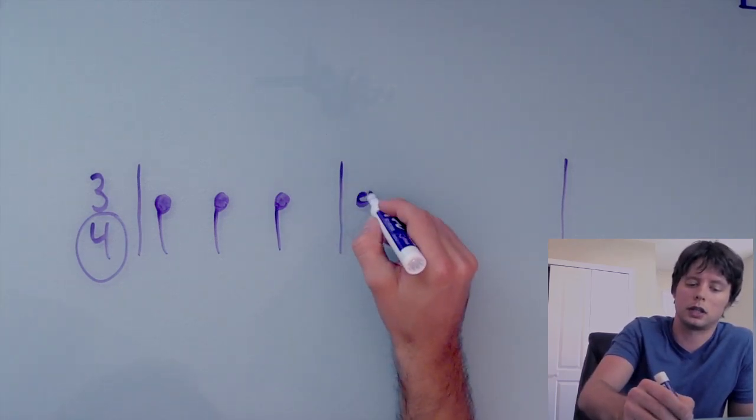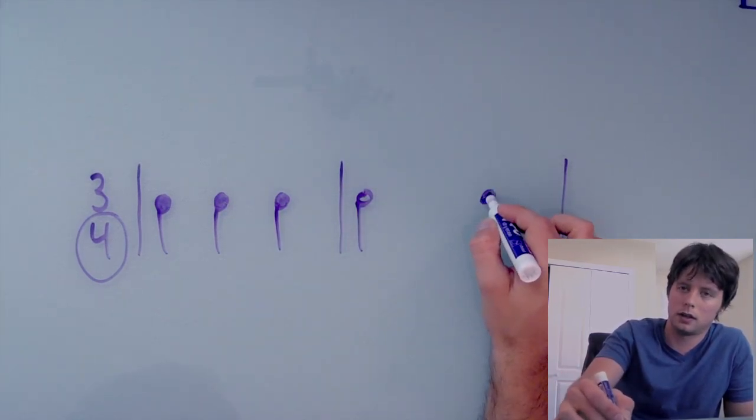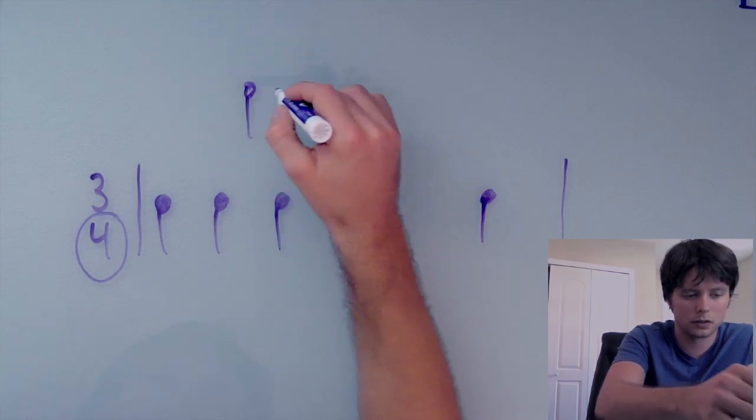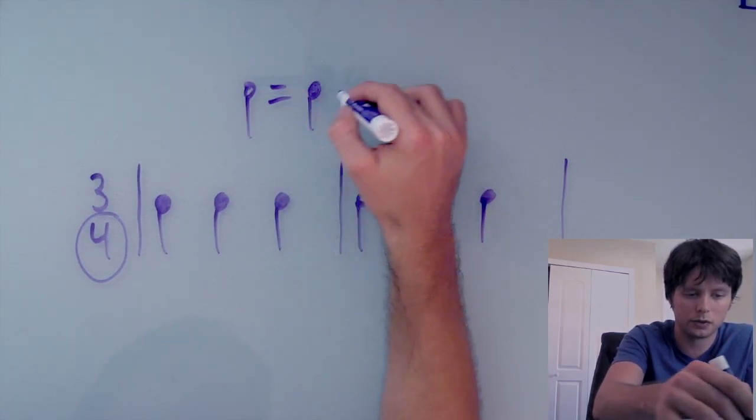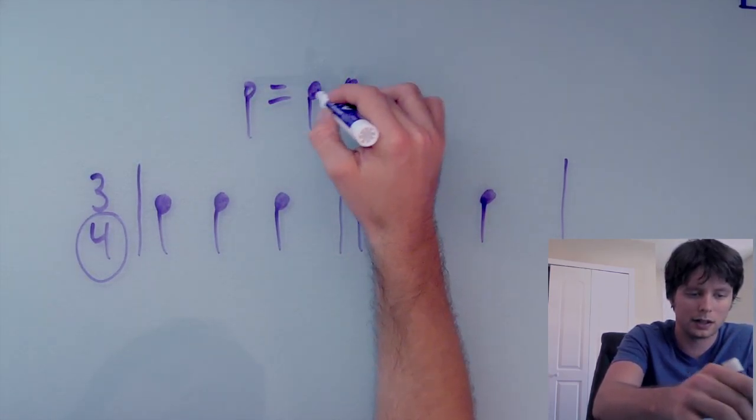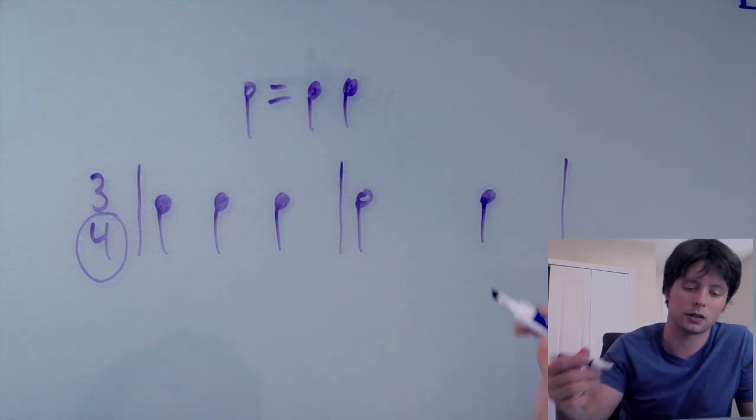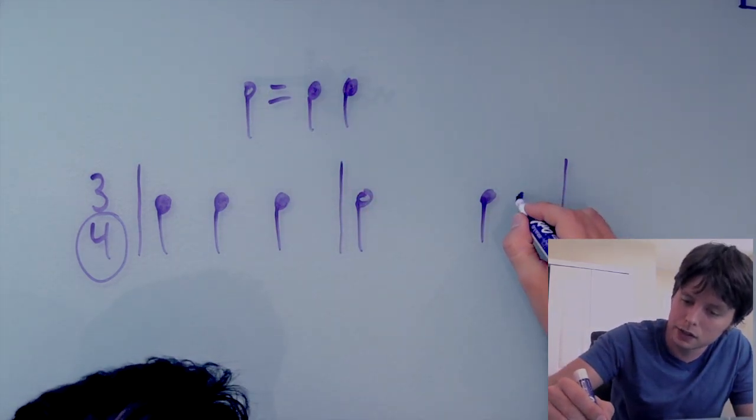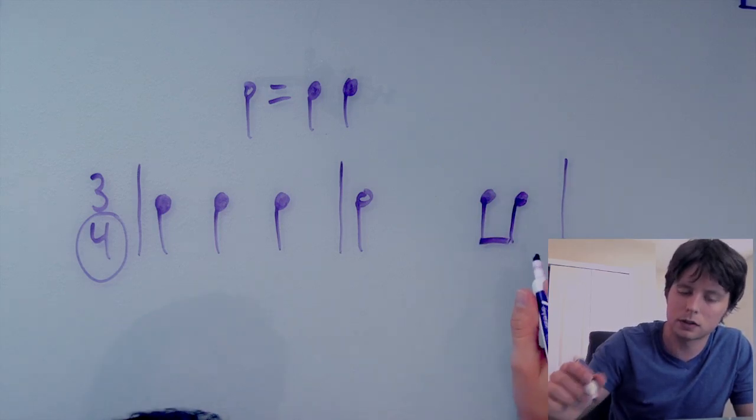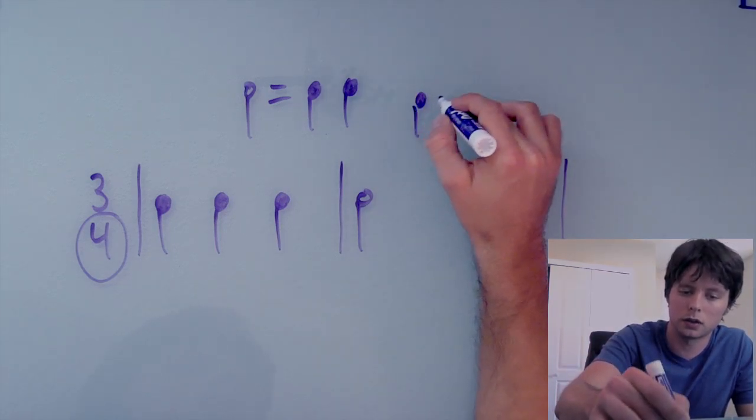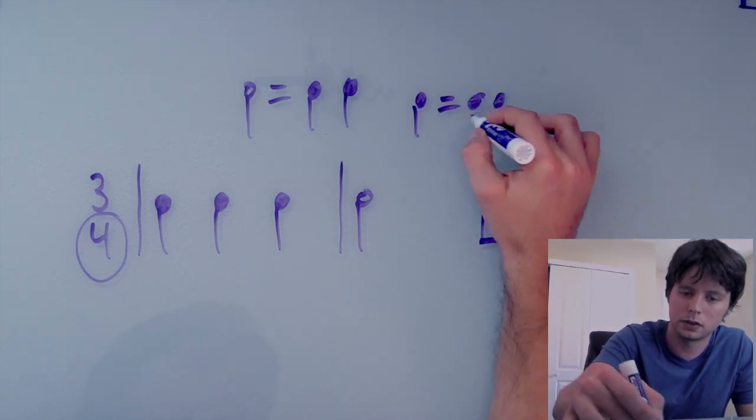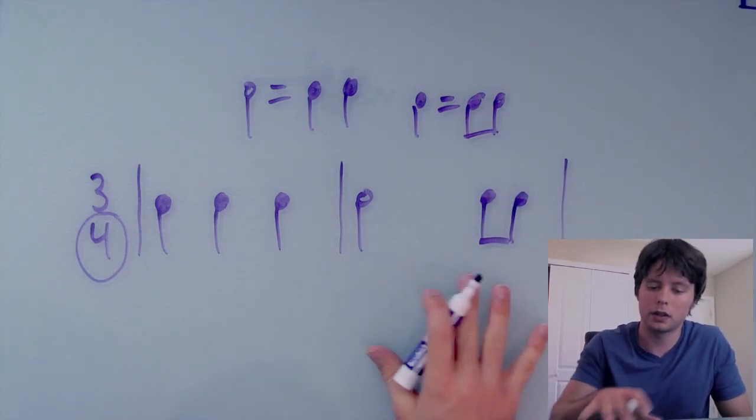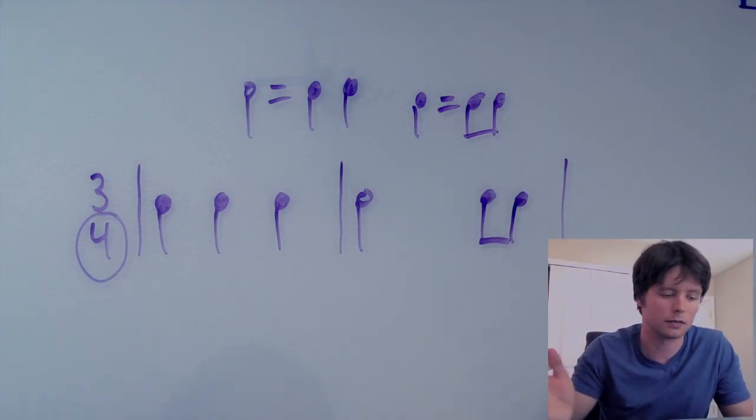So for example a half note and a quarter note. If you remember a half note always equals two quarter notes. And it doesn't matter what time signature we're in, that's always going to be true. Or say for this measure we could actually replace that quarter note with two eighth notes. Same thing, a quarter note always equals two eighth notes in terms of length. So both of these are perfectly valid measures in 3-4.